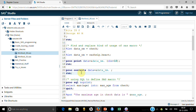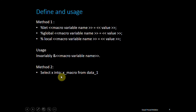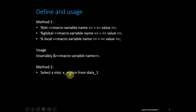Now let me show you another method. This method uses the %let command combined with a PROC SQL SELECT...INTO statement. The syntax goes: SELECT x INTO :x_macro FROM data_one. Whatever value you are selecting gets stored inside the macro variable 'x_macro'. Let me show you an example.